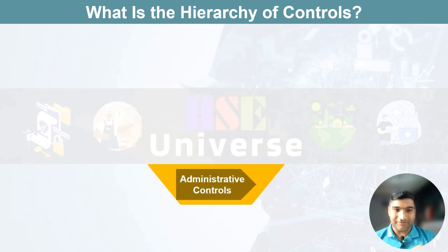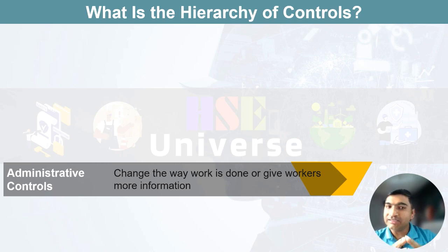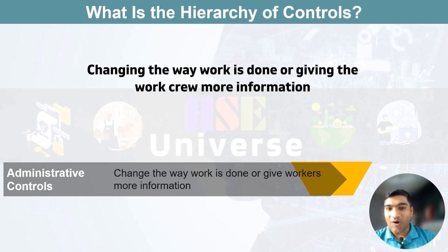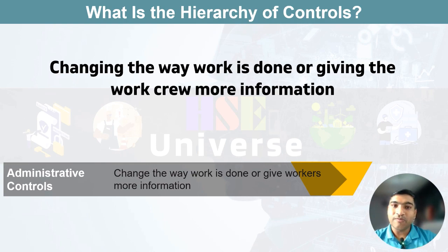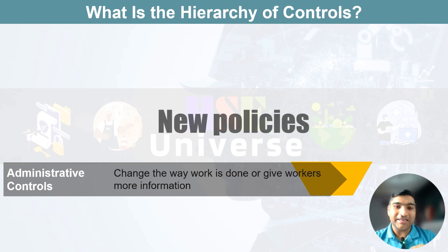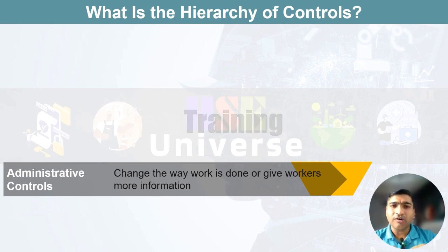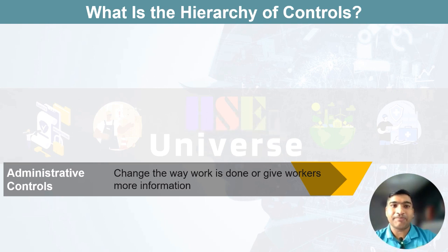Administrative controls involve changing the way work is done or giving the work crew more information. This could mean implementing new policies, procedures, training or warnings to minimize the risk. It's like creating safe work practices and is often used together with higher levels of controls.